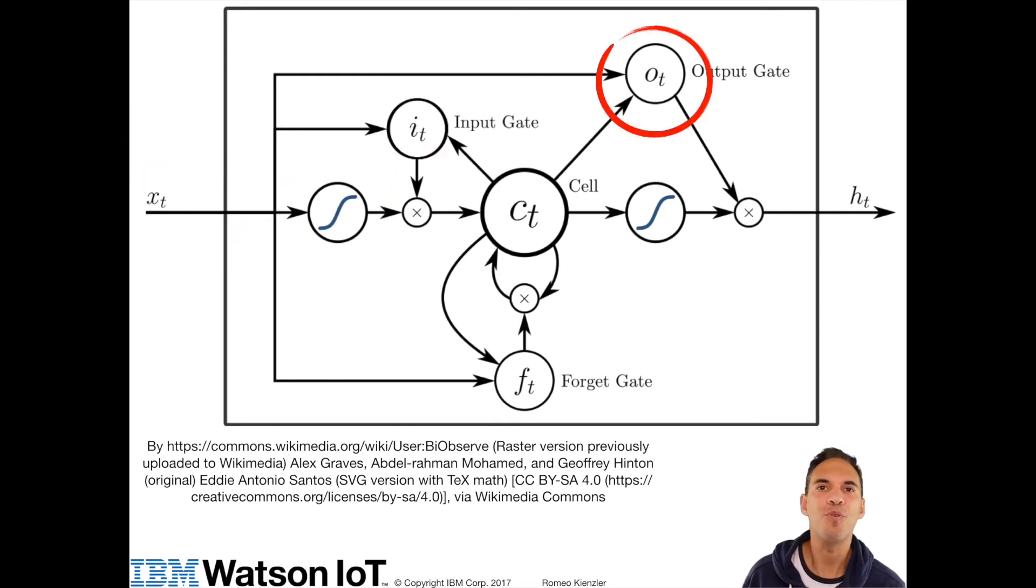So now let's have a look at the output gate. Again, it is controlled by the actual value Xt and by the actual cell state Ct. Here the output gate controls how much of cell state Ct gets output to downstream neurons connected to Ht.